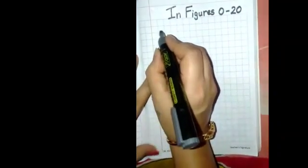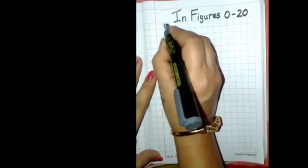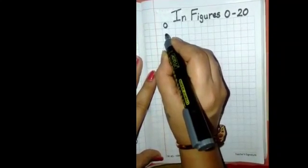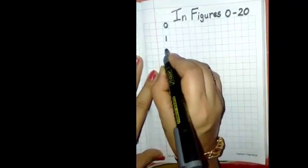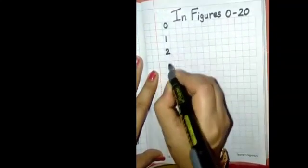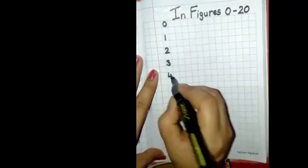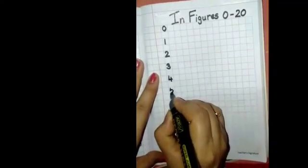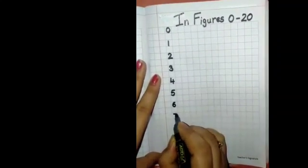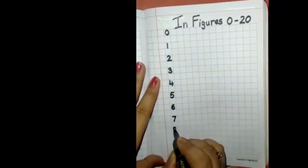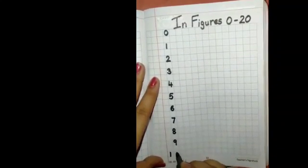Children, you will write from your 0, leave one square, write 1, 2, 3, 4, 5, 6, 7, 8, 9, 10.